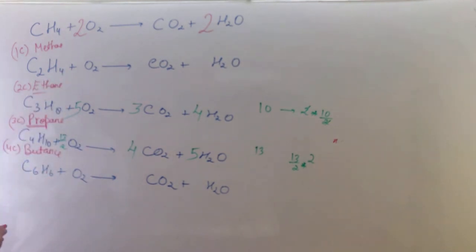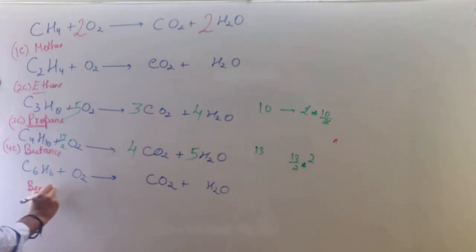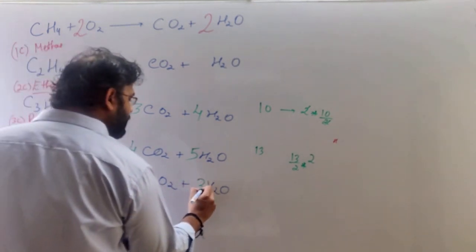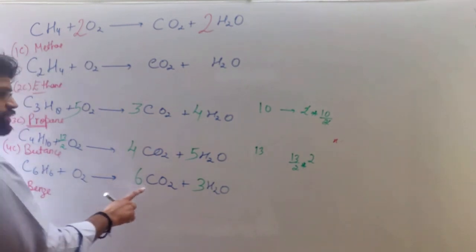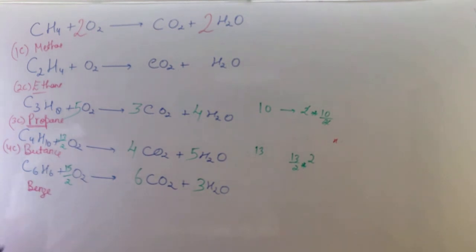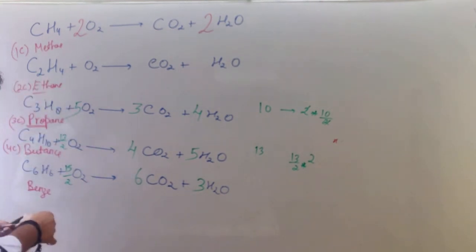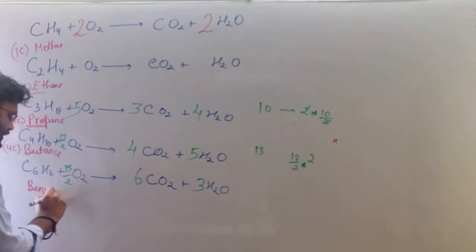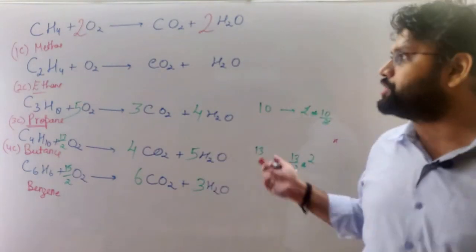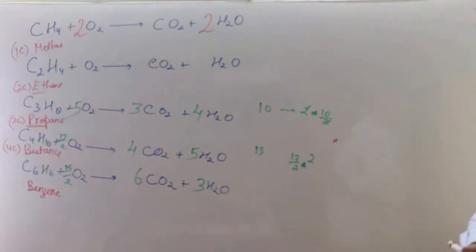For benzene C6H6: 6 carbons, so coefficient 6 for CO2; 6 hydrogens, so coefficient 3 for H2O; oxygen: 6·2 = 12 from CO2 and 3 from H2O = 15 total, so coefficient is 15/2 for O2. This is quite simple. I hope it's clear. We'll implement these balancing concepts in the stoichiometry questions we discuss next.